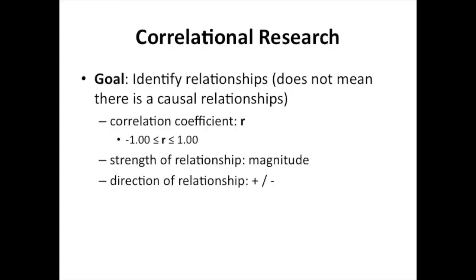The goal of correlational research is to identify relationships between factors. However, it is very important to understand that these factors do not necessarily have a causal relationship. It is just saying that there is, in fact, a relationship between these things, which we represent with the correlational coefficient, which is represented by the letter R.